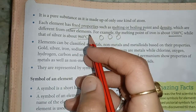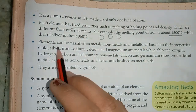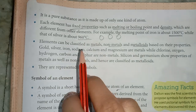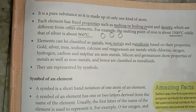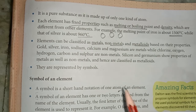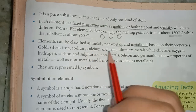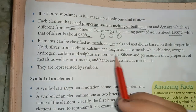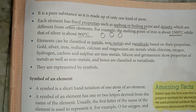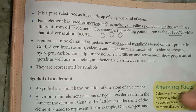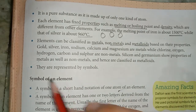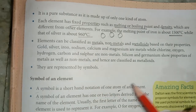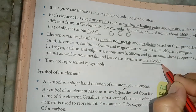Each element is different from other elements. Elements can be classified as metals, non-metals, and metalloids based on their properties. Metals include gold, silver, iron, sodium, calcium, and magnesium. Non-metals include chlorine, oxygen, hydrogen, carbon, and sulfur. Silicon and germanium show properties of both metals and non-metals and are hence classified as metalloids.